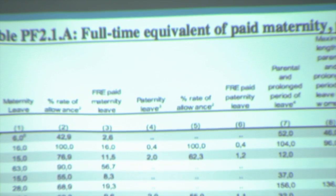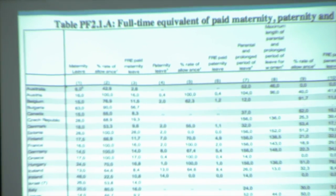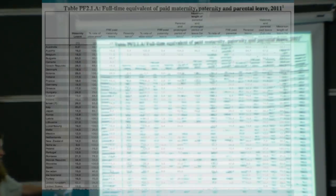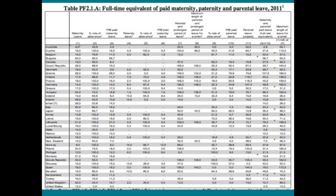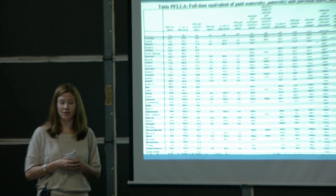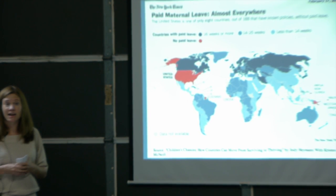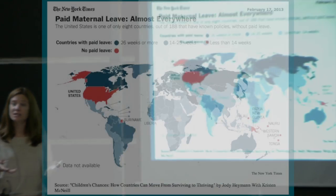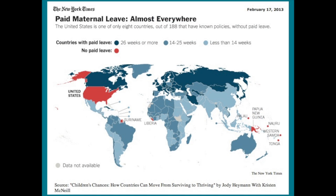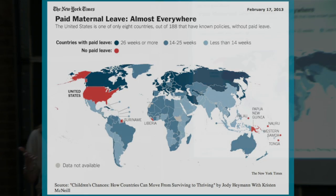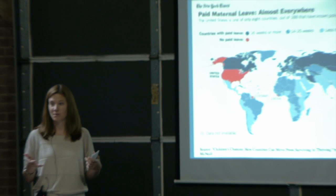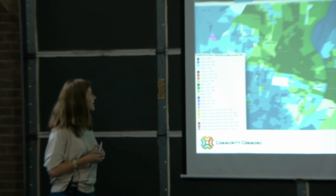Likewise, we can take a look at a table of information presenting the same data — all the nations in the world as rows with lots of detail. You really have to dive in and spend time analyzing it, and it doesn't work well in a group setting to spark conversation. Finally, we can take a look at a map presenting the same point. Very quickly, that same point is illustrated on screen — the United States has no paid maternity leave — and it's more interesting when looking at it with respect to the rest of the world.